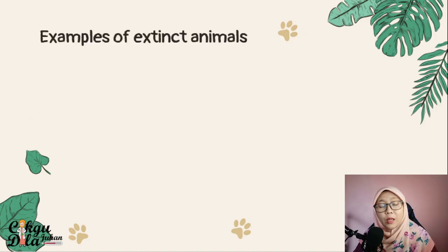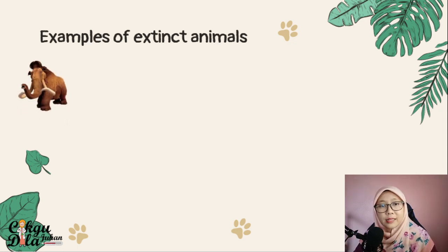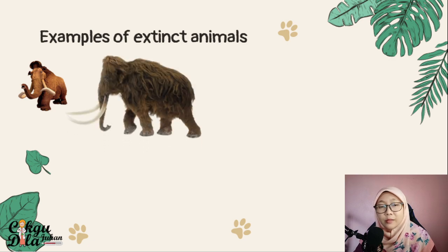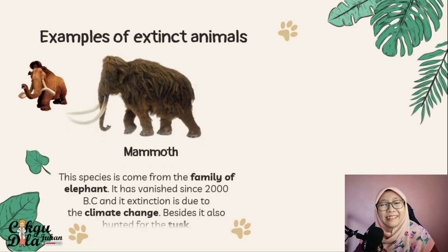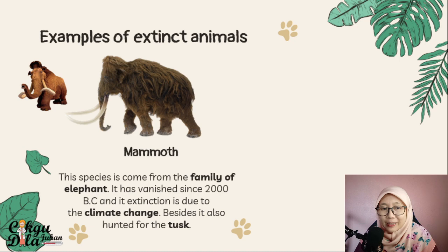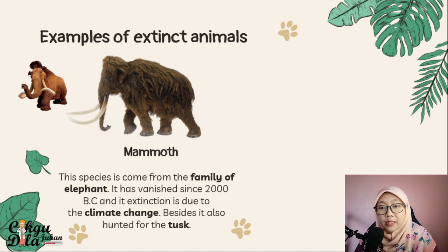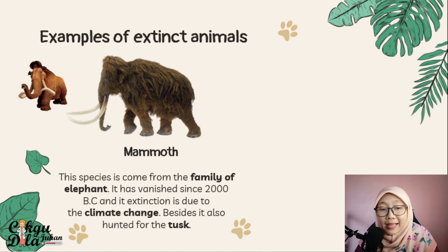Let's look at examples of extinct animals. First, we have the mammoth. This species comes from the family of elephants — it has a trunk, so it looks like an elephant but is a different species. It vanished around the 2000th century BC, and its extinction is due to climate change. Besides that, it was also hunted for its tusks, similar to elephants.